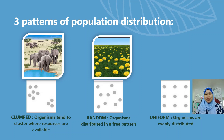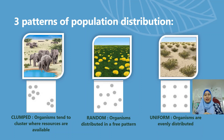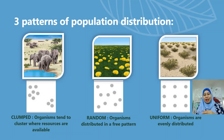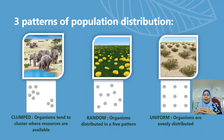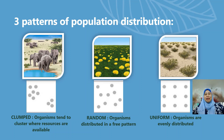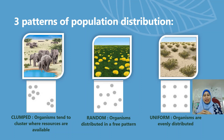The last one is uniform. For the uniform pattern of population distribution, we can find it in an orchard, because normally the farmer will plant the plants in a uniform manner and the resources are available evenly. In this uniform pattern, the organisms are evenly distributed.